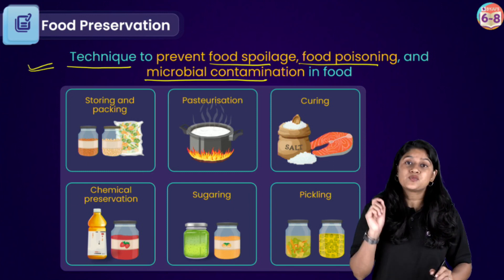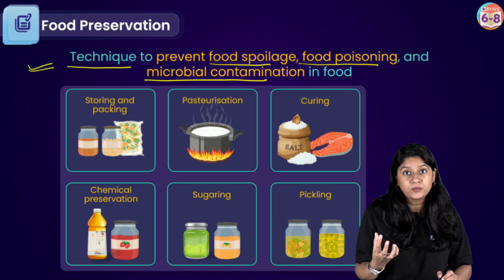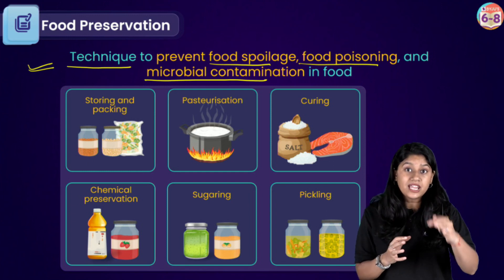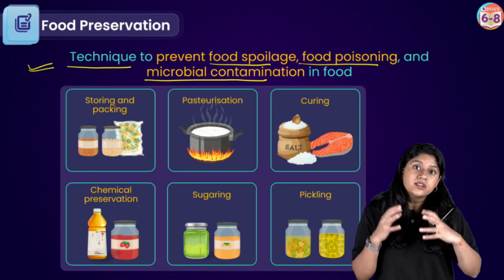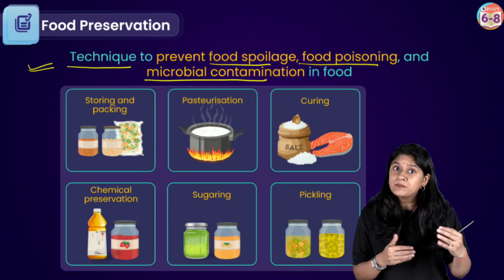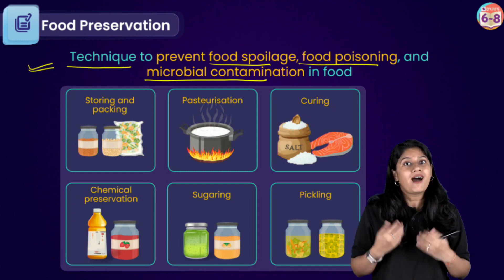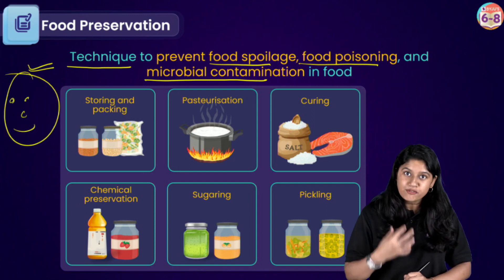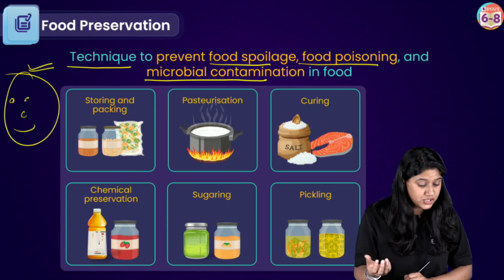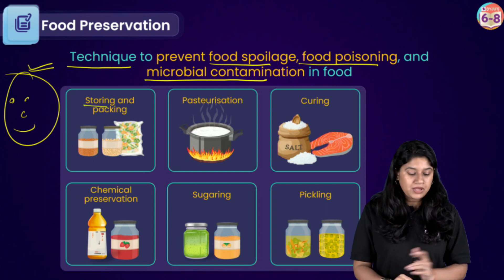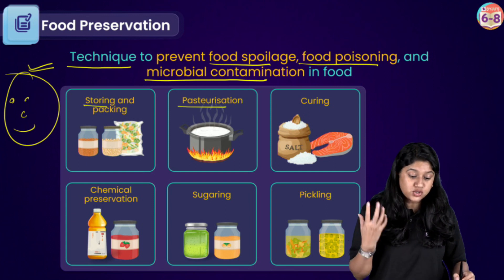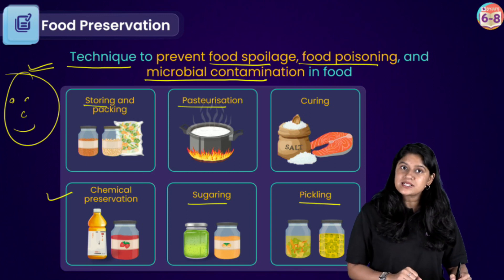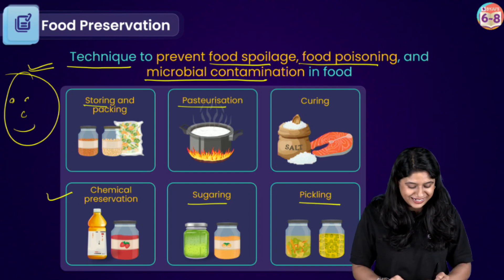We all know that it's very important for us to preserve the food. I'm sure you would have seen your parents preserving the food because they know that if they will not preserve it, the food will get contaminated or spoiled and will be unfit for us to eat. The different techniques we have in food preservation are: storage and packaging, pasteurization, salting or curing, chemical preservation, sugaring, and pickling.